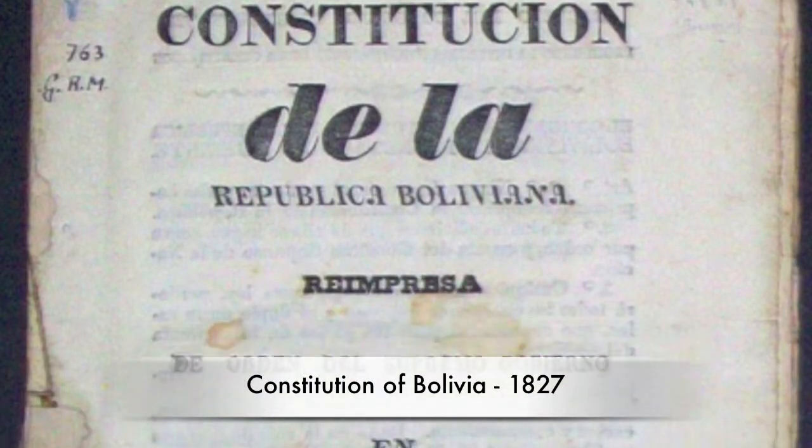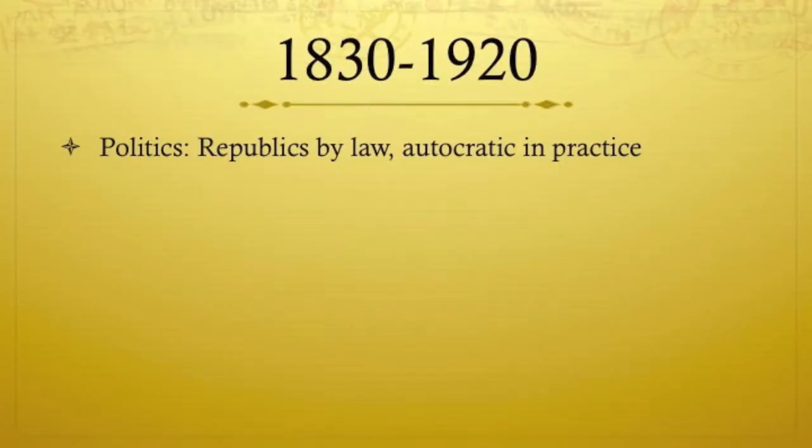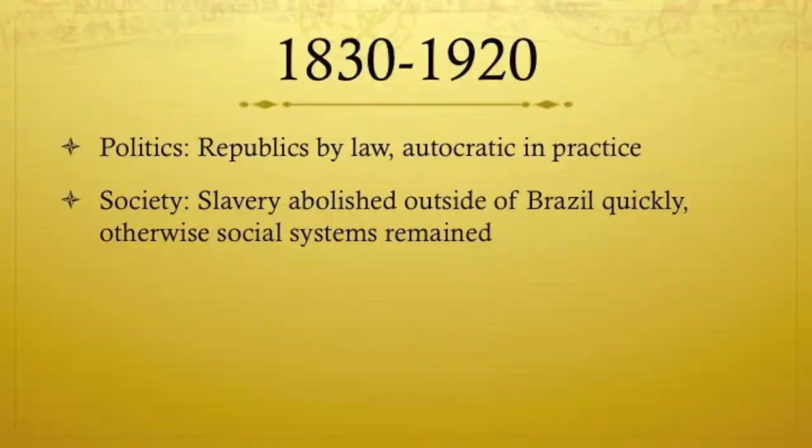Politically, most former colonies wrote constitutions establishing republics, but practically, most were ruled autocratically by some form of dictator. Slavery was abolished everywhere, except Brazil, fairly quickly. But otherwise, social systems remained the same.